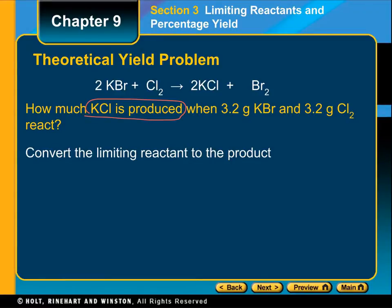When we did that, we discovered that the limiting reactant was KBr. You would need to either first figure out which one was a limiting reactant or know already. If we know that the KBr is our limiting reactant, we're going to take the 3.2 grams of KBr that we have in the problem.